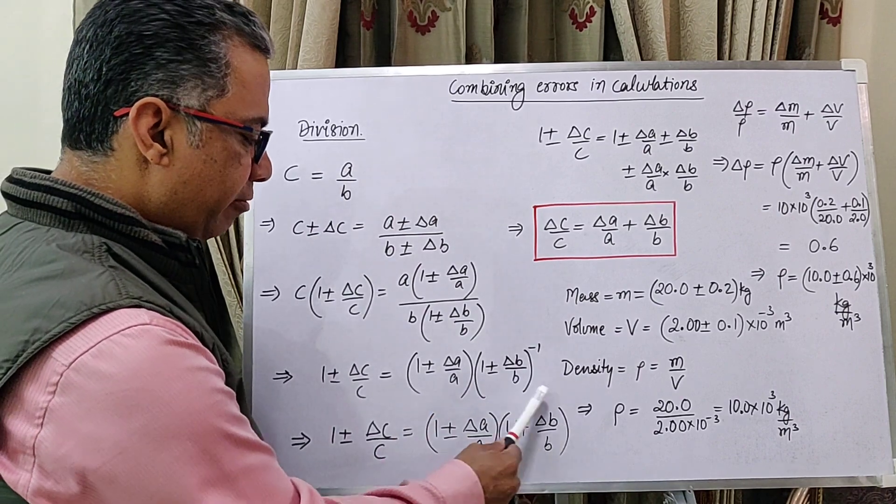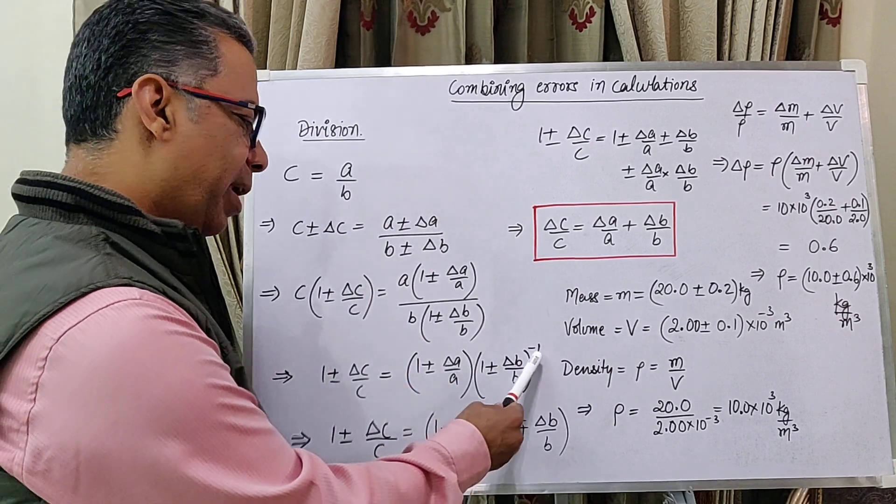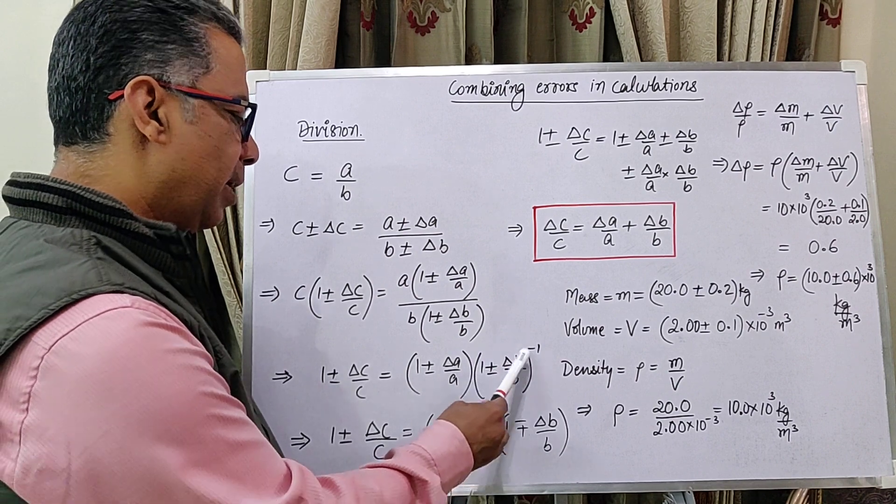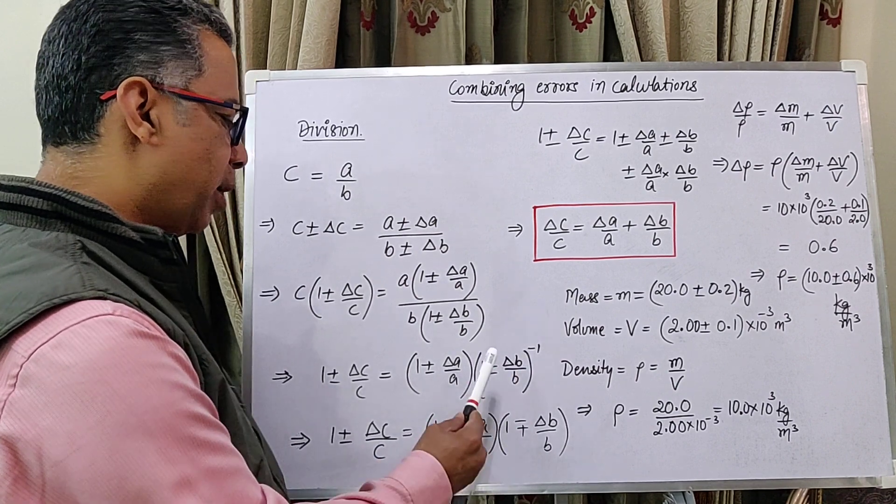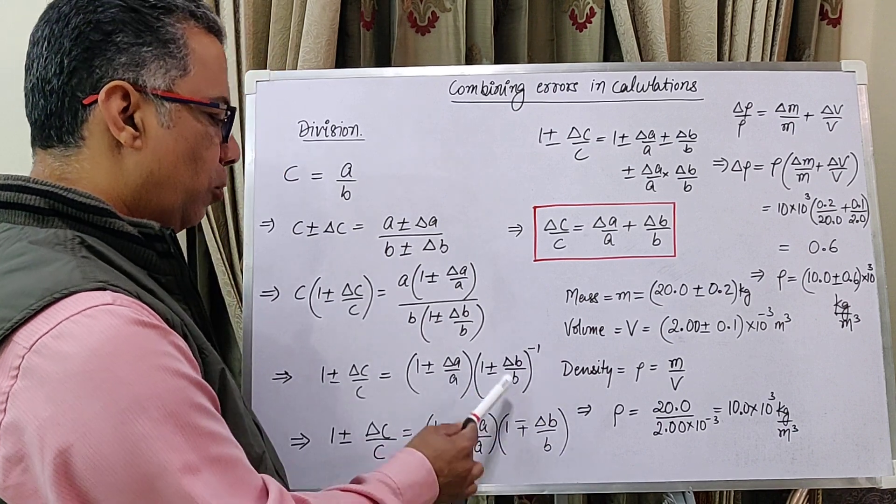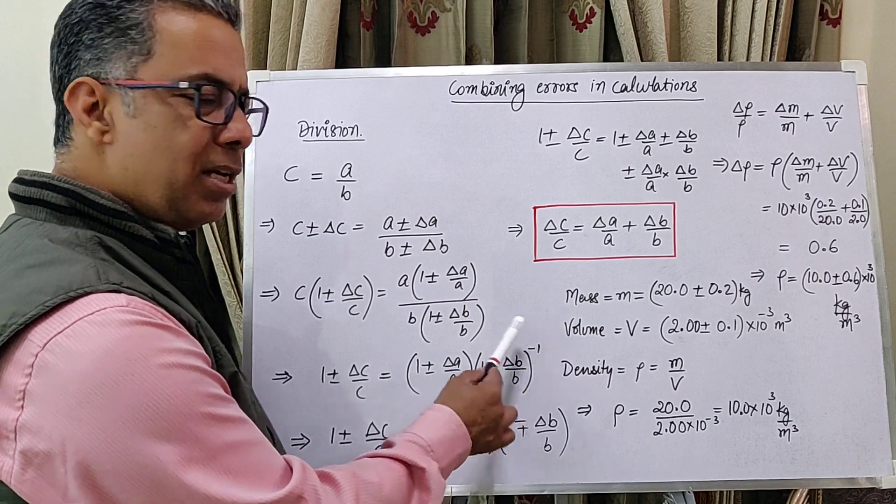Now, what we have done here is because delta B by B is small in comparison to 1, we have applied the binomial approximation. So, if this is 1 plus minus x to the power n, it becomes 1 minus plus delta B by B. So, the plus minus becomes minus plus because we are multiplying by minus 1.